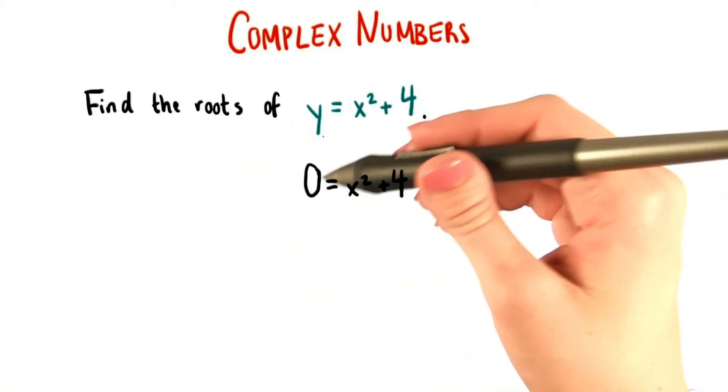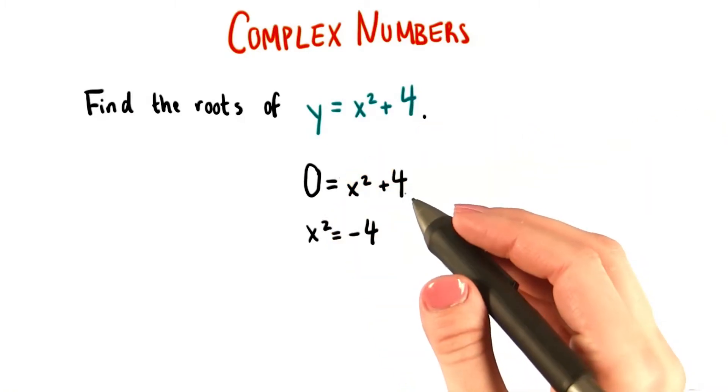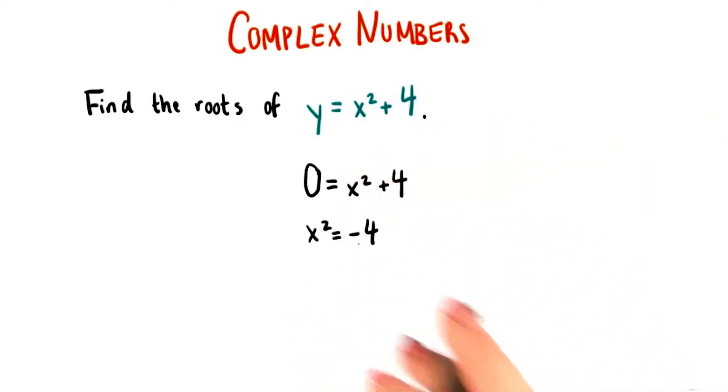To find the roots, we need to replace y with 0, and then we just isolate x. After a slight bit of rearranging, we have x squared equals negative 4.